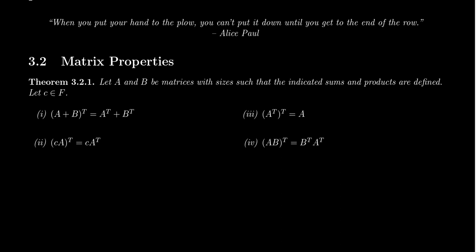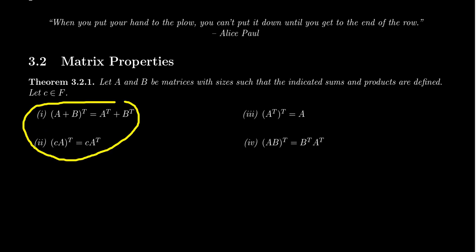Likewise, if you interact with some scalar C from the field F, then (CA)^T equals C times A^T. The scalar essentially comes out of the transposition process. Properties one and two tell us that transposition preserves matrix addition and scalar multiplication — this is what we refer to as the linearity property.